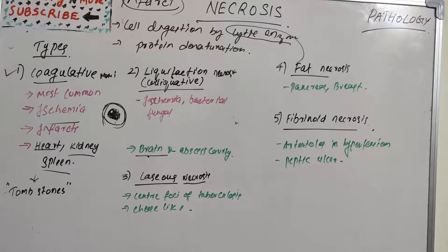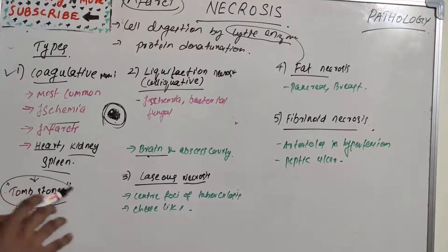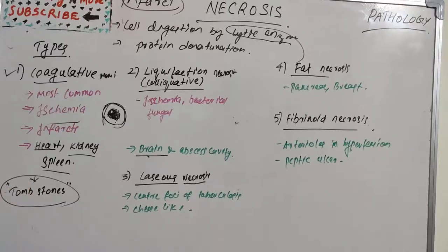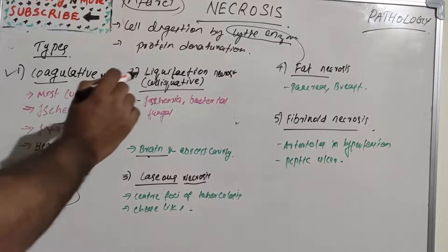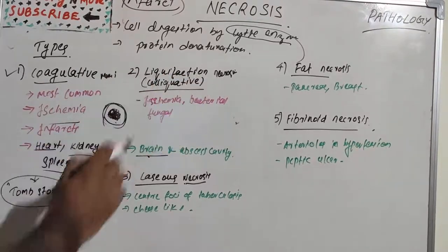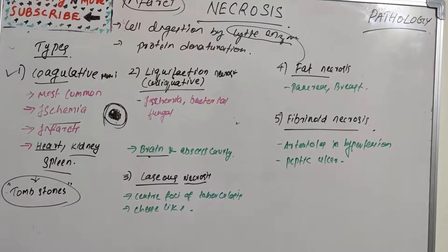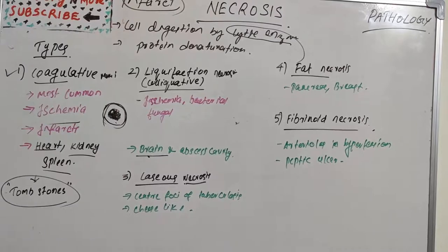In gross morphology, coagulative necrosis foci in early stages are pale, firm, and slightly swollen; with progression they become more yellowish. Microscopically, we can see tombstone appearances — the normal cells are converted to a tombstone appearance. That is about coagulative necrosis.